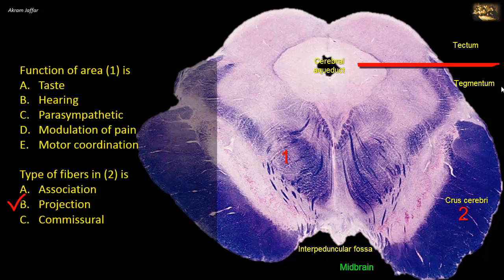Commissural fibers interconnect opposite sides of the brain — for example, the corpus callosum — while association fibers interconnect regions of the cerebral cortex within the same hemisphere — for example, the cingulum of the limbic system.